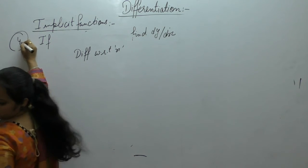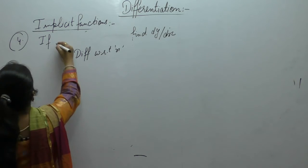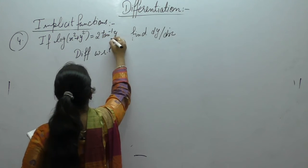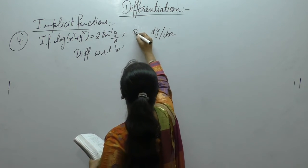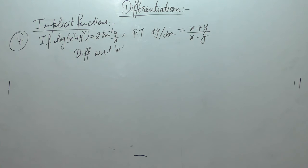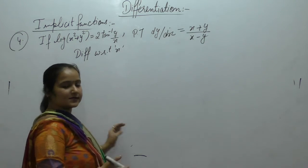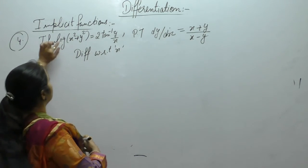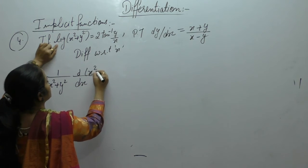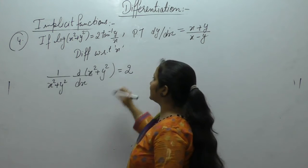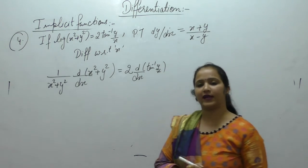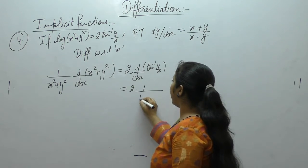Next one: if log(x² + y²) = 2·tan⁻¹(y/x), prove that dy/dx = (x + y)/(x − y). Differentiate with respect to x. Derivative of log is 1 over the argument, so we get 1/(x² + y²) times the derivative of (x² + y²). On the right side, 2 is constant; derivative of tan⁻¹ uses the formula 1/(1 + u²) where u = y/x.